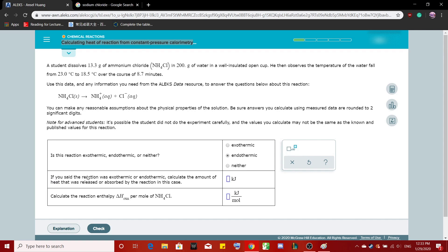So number two, if you said the reaction was exothermic or endothermic, calculate the amount of heat that was released or absorbed by the reaction in this case. Okay, that's fairly easy. One very commonly used formula for calculating heat, you know, the Q equals MCAT. And we're using water, so the specific heat of water is 4.186. We'll use that value.